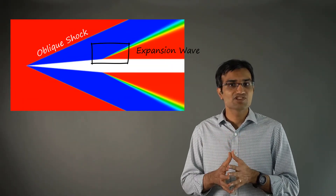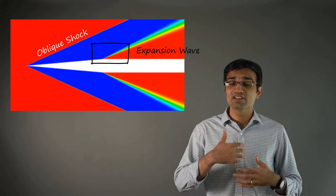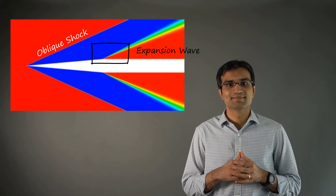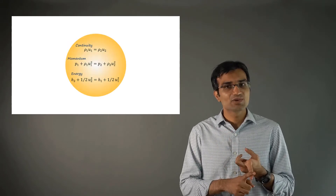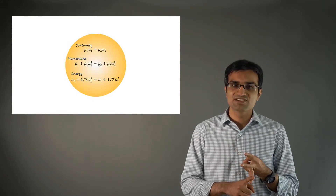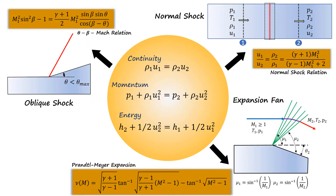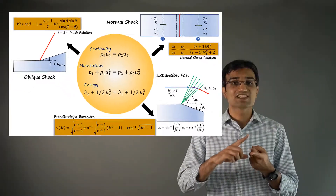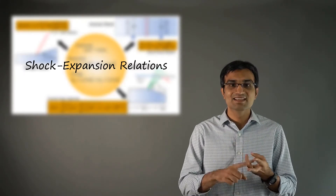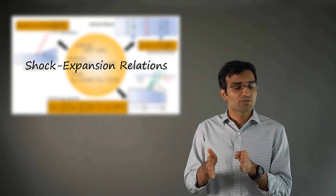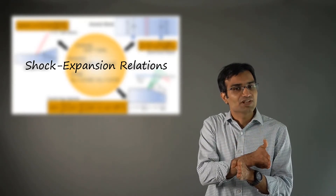We know that the formation of compressible waves such as shocks and expansion waves are common observations in supersonic compressible gas flows. Using steady-state continuity, momentum, and energy equations, mathematical relations can be developed to describe the flow behavior across these isolated normal shocks, oblique shocks, and expansion waves. These shock and expansion relations help us estimate flow properties such as Mach number, density, pressure, and temperature just downstream of these waves based on the upstream conditions.